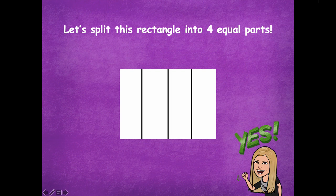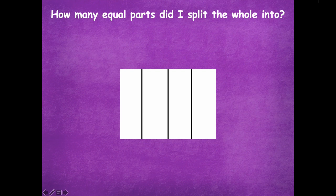I nailed it that time — they're pretty close to the same. Remember, when you're partitioning your shapes nothing is going to be exactly perfect unless you get out a ruler and measure to the closest millimeter. We don't have to measure that closely. As long as your shapes are pretty close and it's easy to tell there are four equal parts, you'll be fine.